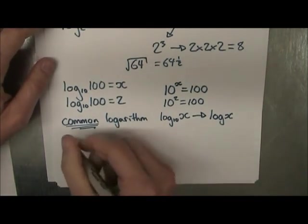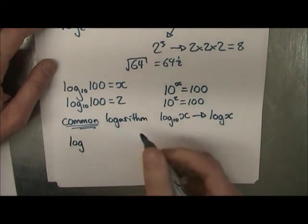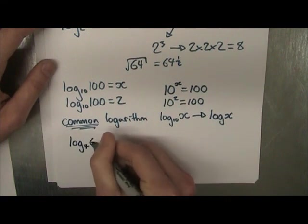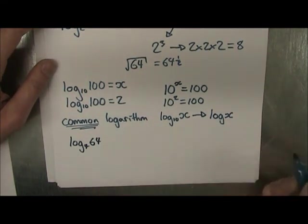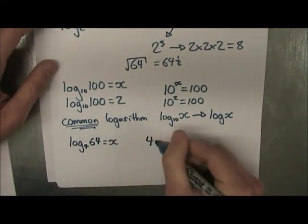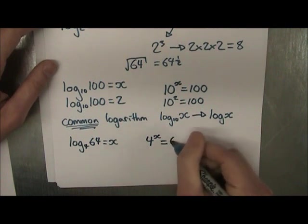Let's do another example. So let's say I take log base 4 of 64. Alright? Is equal to x. So we're going to take the base to an exponent, to the power of x is equal to 64.